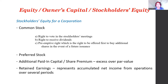Common stock and preferred stock are both forms of invested capital. Common stockholders have the right to vote at stockholders' meetings, the right to receive dividends, and the preemptive right — the right to be offered first to buy additional shares in the event of a future issuance. Preferred stockholders, as the name implies, are preferred: when dividends are declared by the board of directors, they are paid first, and when the company liquidates, they are also paid first. However, preferred stockholders have no right to vote.